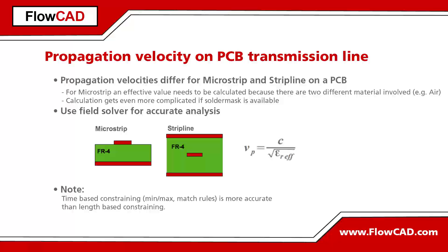The propagation velocity can be calculated by dividing the speed of light by the square root of the dielectric constant. For stripline, this is straightforward, as usually one material is involved. Assuming a dielectric constant of four will result in a propagation velocity of around 15 cm per nanosecond.